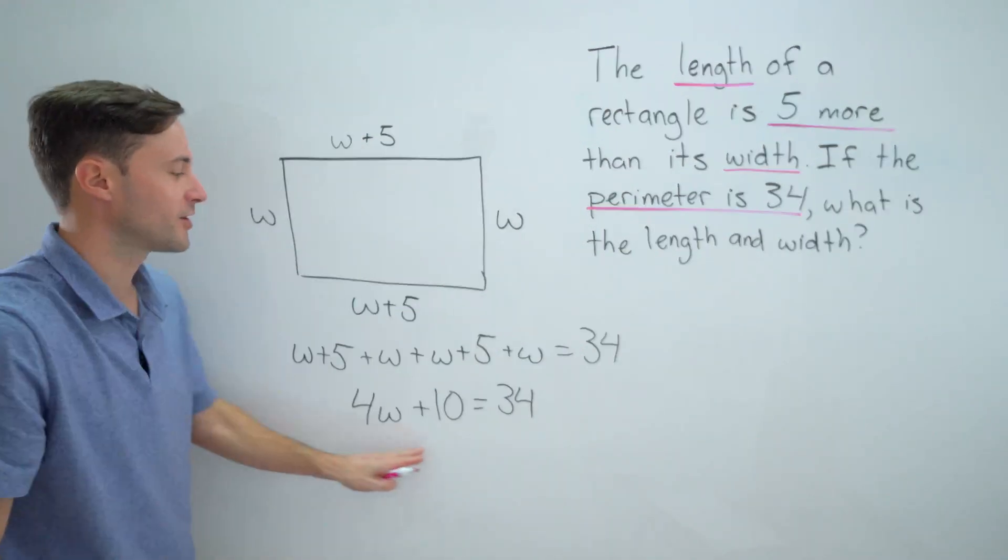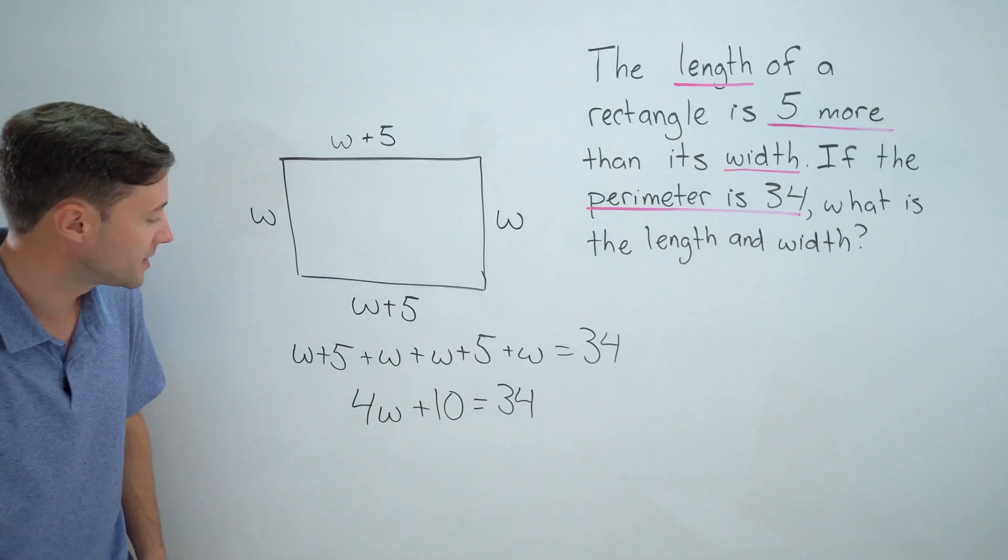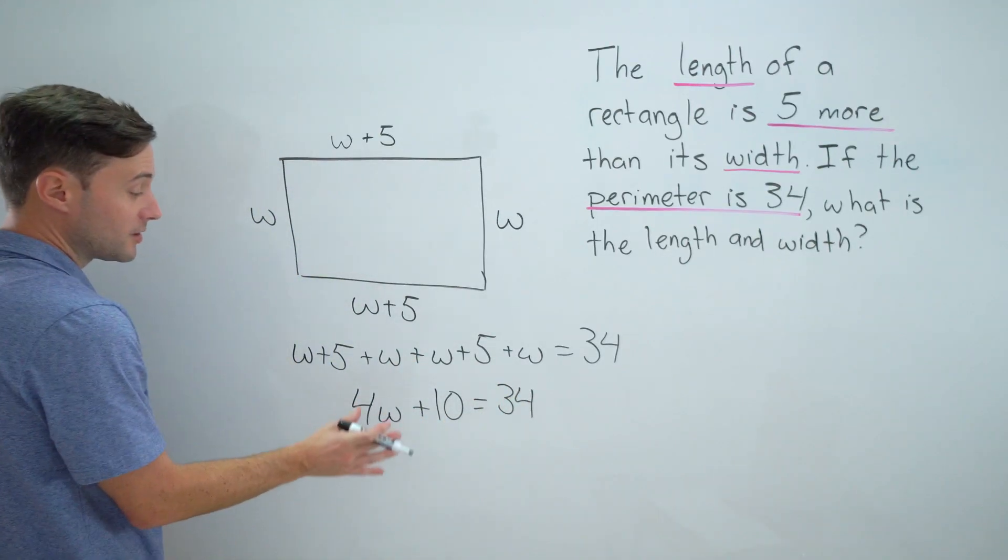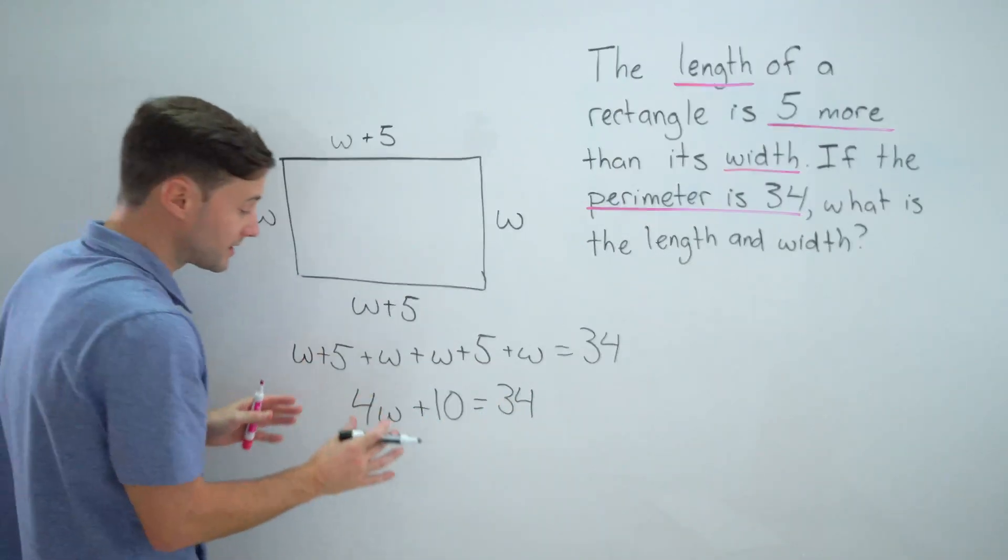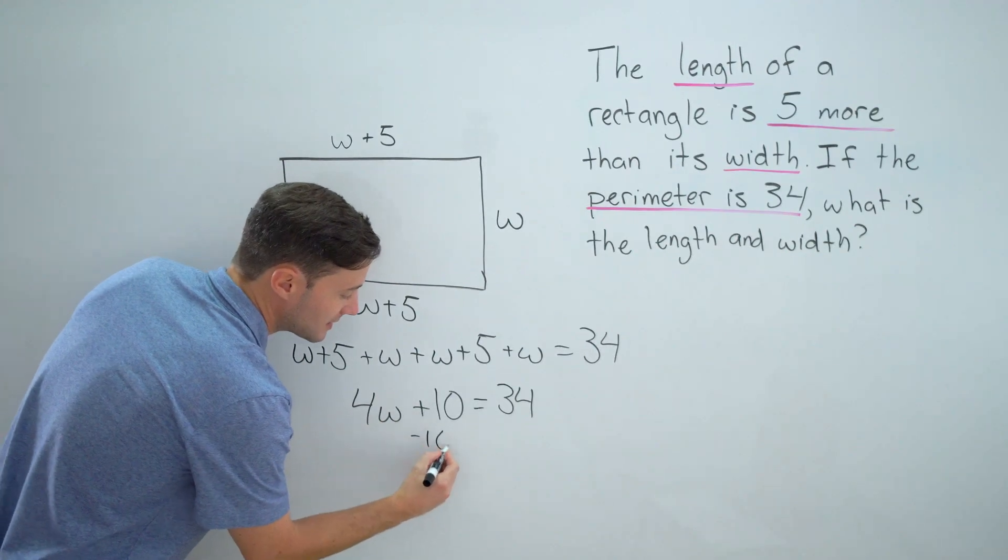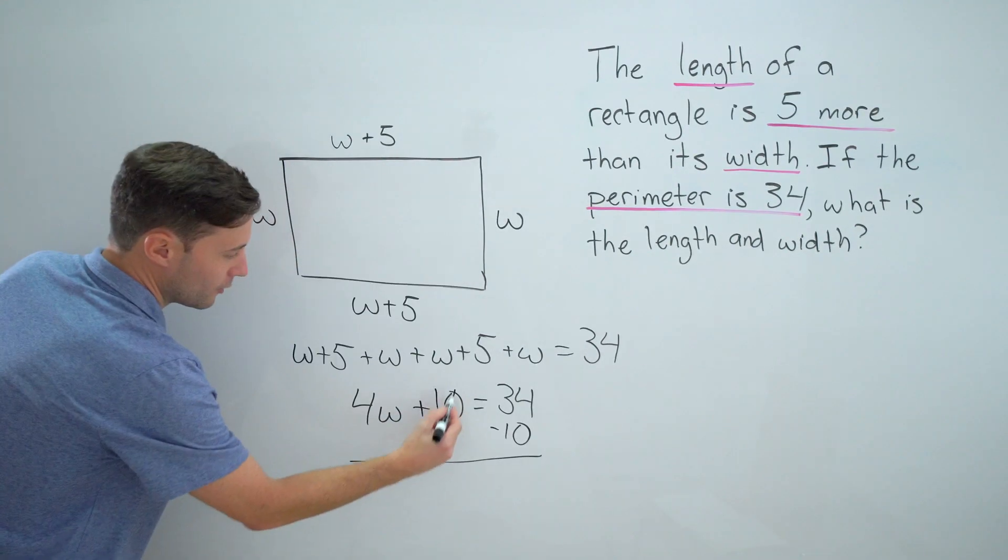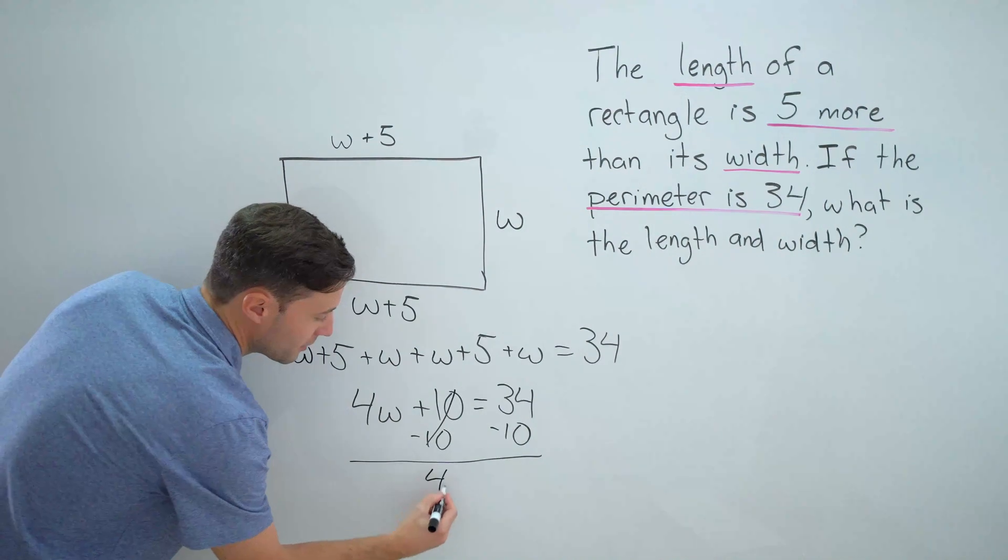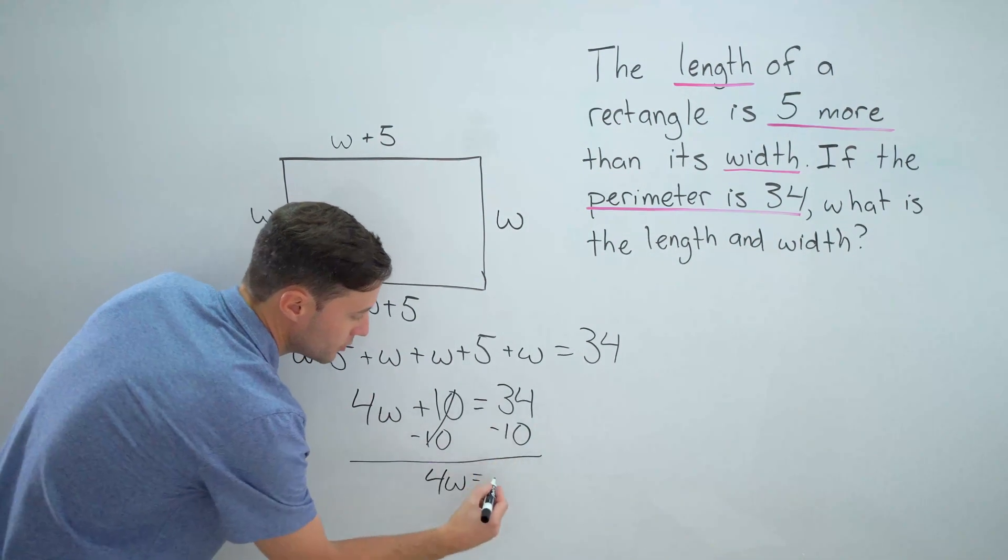Now this is starting to look like a normal two-step equation. I'm going to try to get the variable alone on one side. First, I'm going to subtract 10 from both sides—those go away—and I've got 4w equals 24.